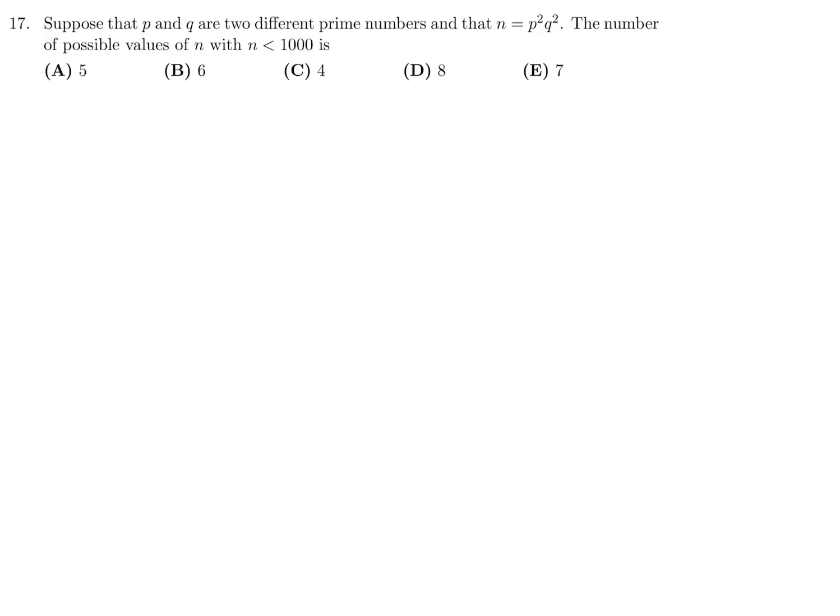Suppose that P and Q are two different prime numbers, and that N is equal to P squared times Q squared. The number of possible values of N with N less than 1,000 is. Let's make a table and see what we get. We have to pay close attention to the restrictions, which are N is less than 1,000. What are our prime numbers? 2, 3, 5, 7, 11, 13, 17, 19. I'm pretty confident we won't have to go farther than that.